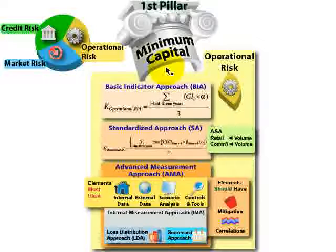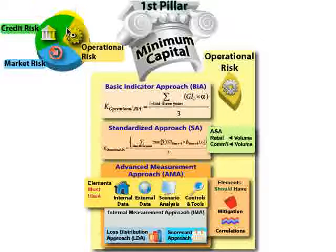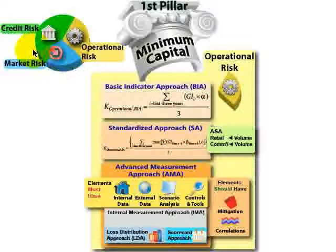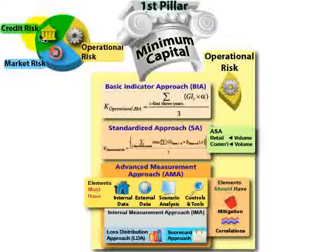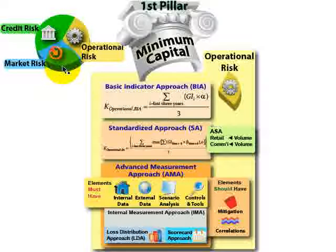That first pillar has rules for each of the three major risk buckets. The original Basel Accord — that's 1988 — contained rules for only credit risk. Then the amendment in 1996 added market risk, and those rules still apply. Finally, the Basel II framework, the modern Basel, added operational risk and dramatically revised the credit risk, such that Basel II has rules for all three buckets.